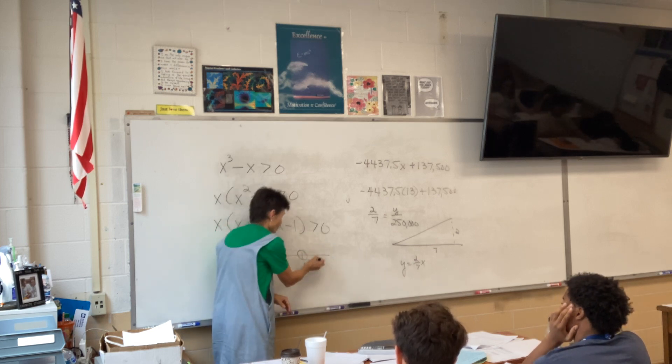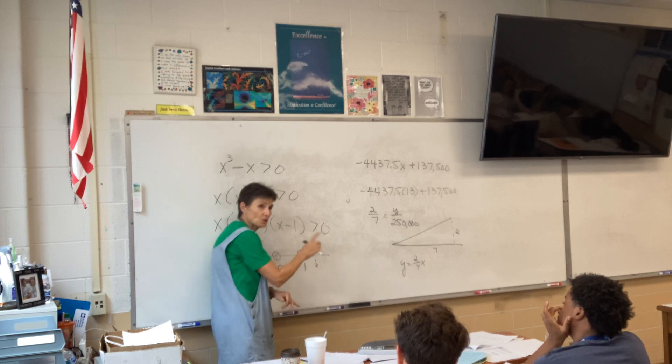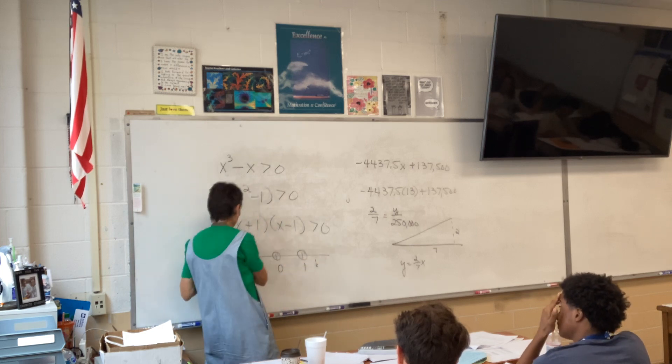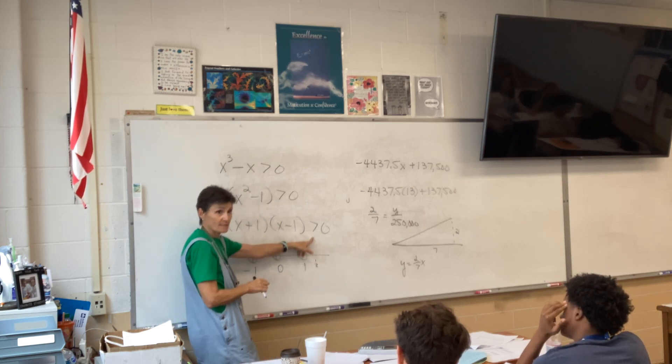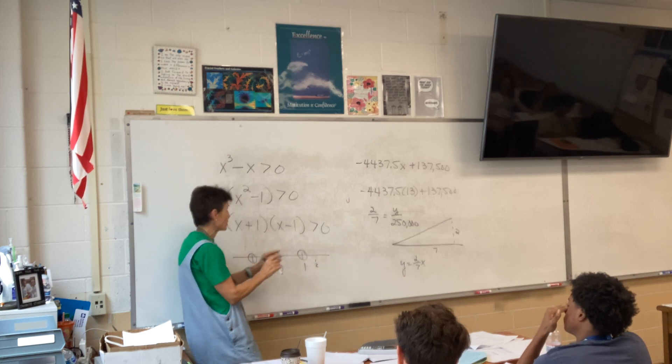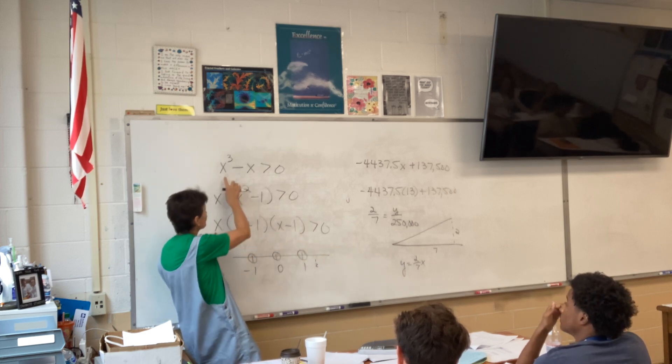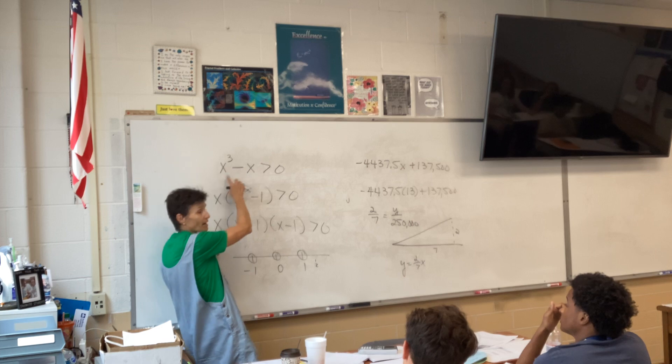Here's where 2 is. Should that be shaded? Well, if I plug in 2 and I'm bigger than 0, yes, it should be shaded. So, I'm going to plug in 2. You can do it up here. Might be easier, actually. Do it up there. 2 cubed minus 2 is 6. Is 6 bigger than 0? Yes. So, this gets shaded.